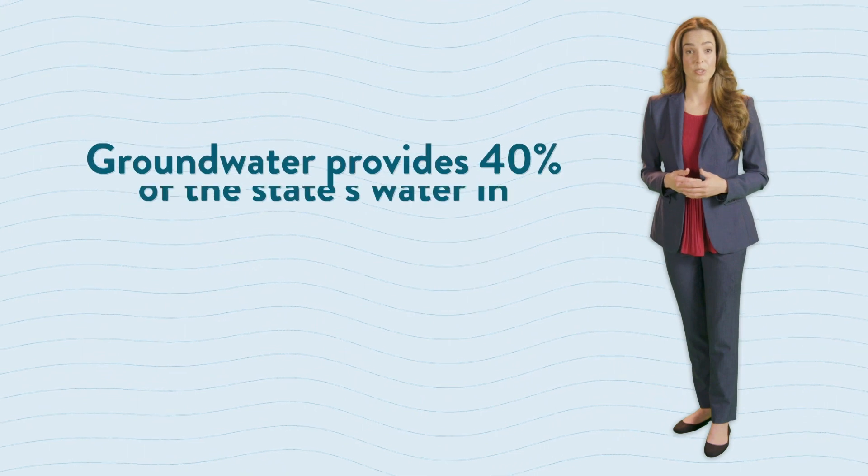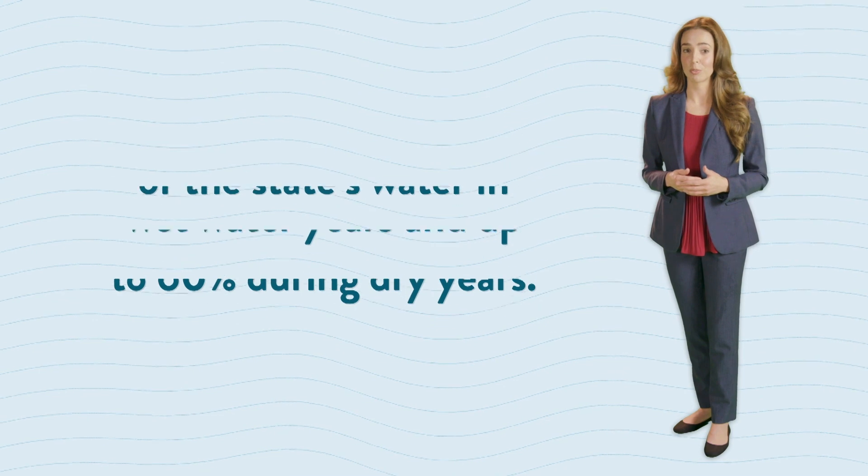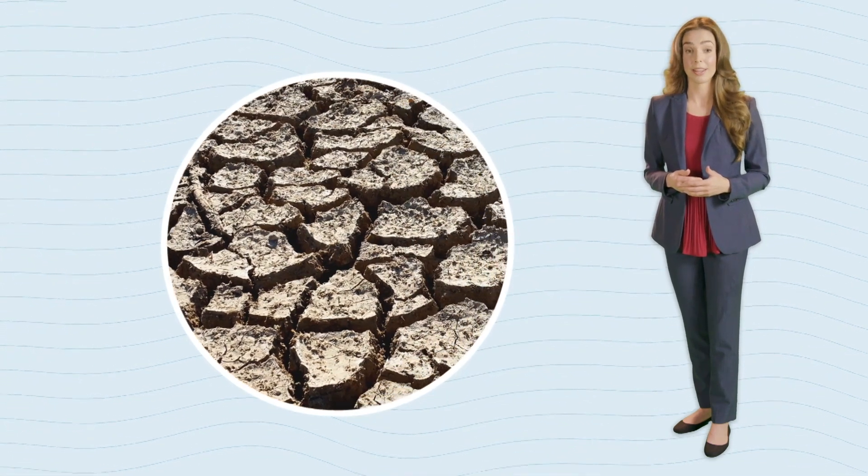During dry or drought years, groundwater acts as a buffer, as a water savings account. This is especially important with California's changing climate that is causing more hot dry weather and less snow and rain.